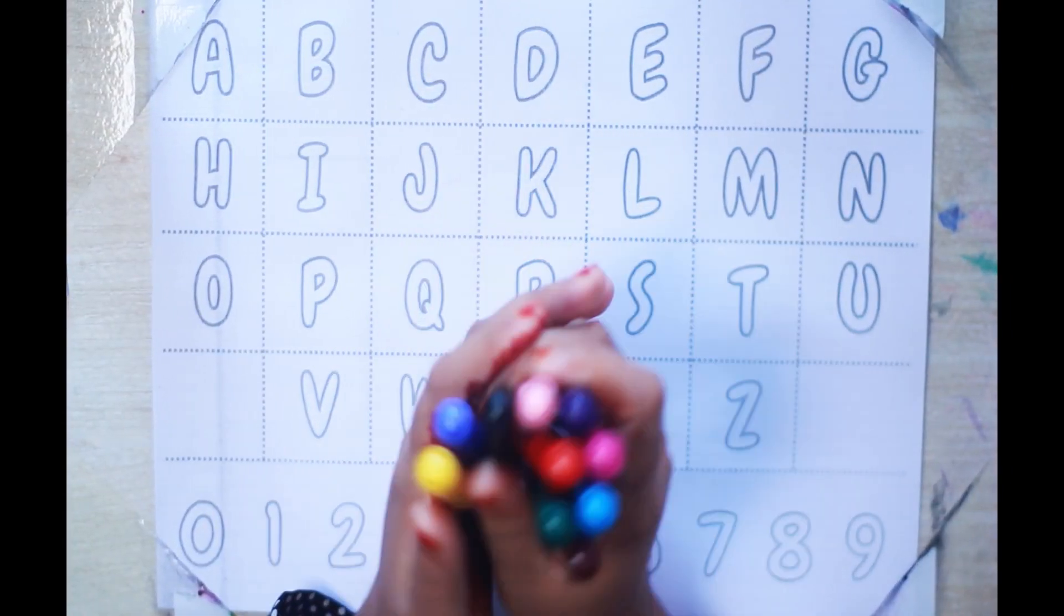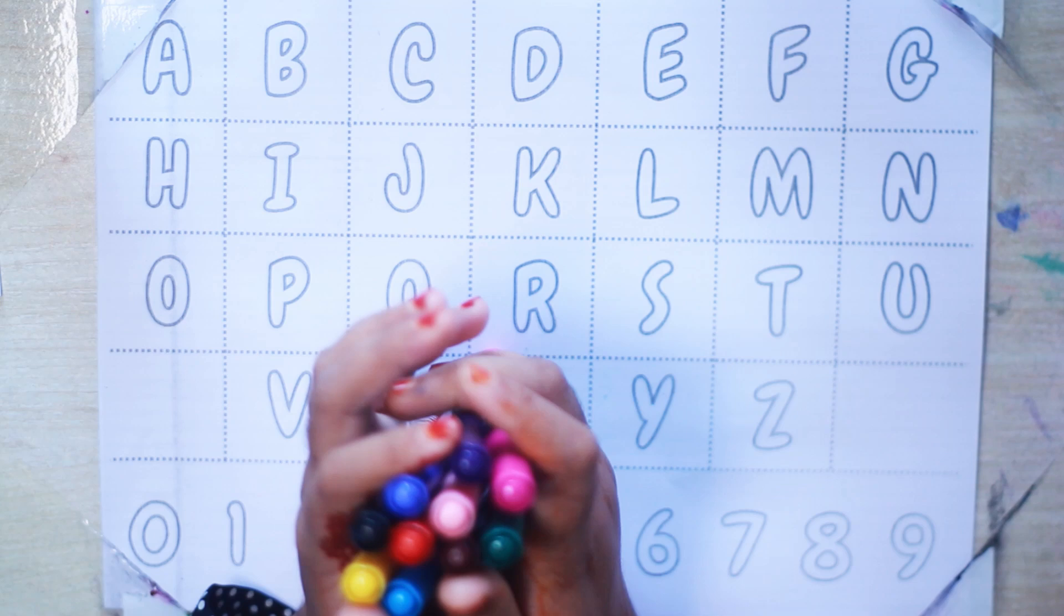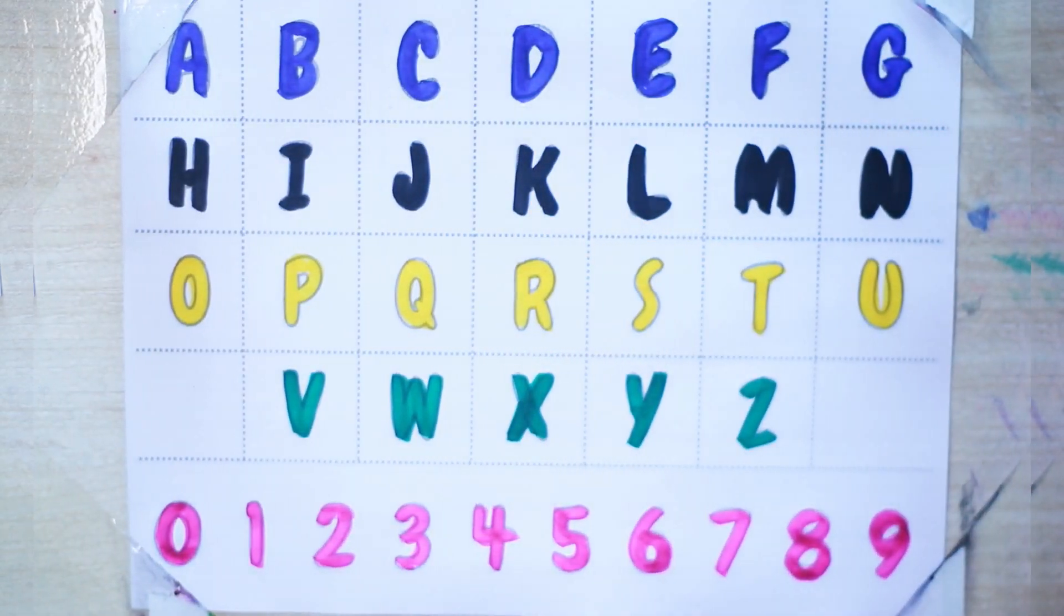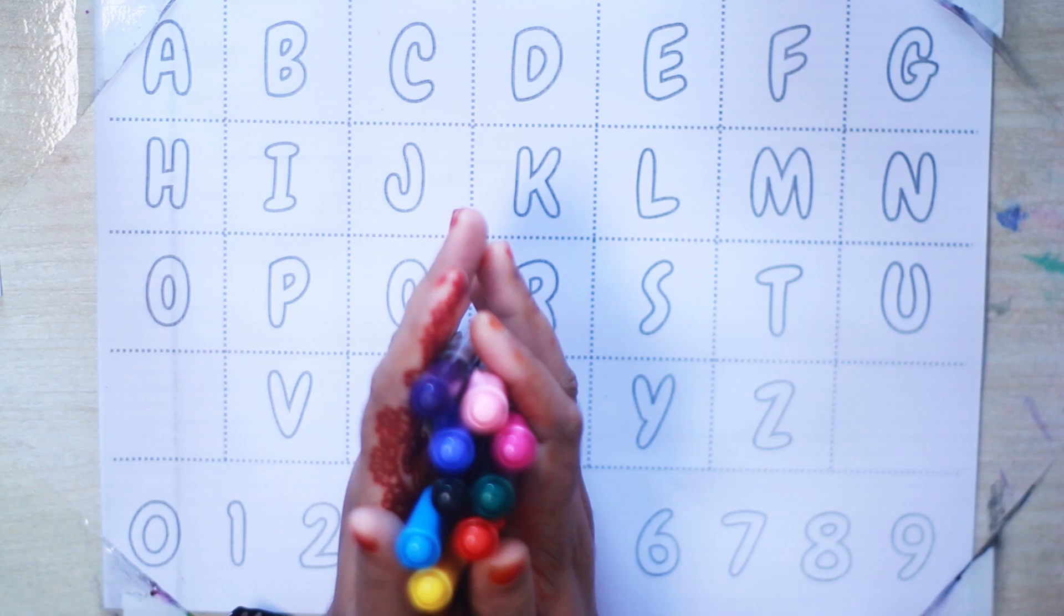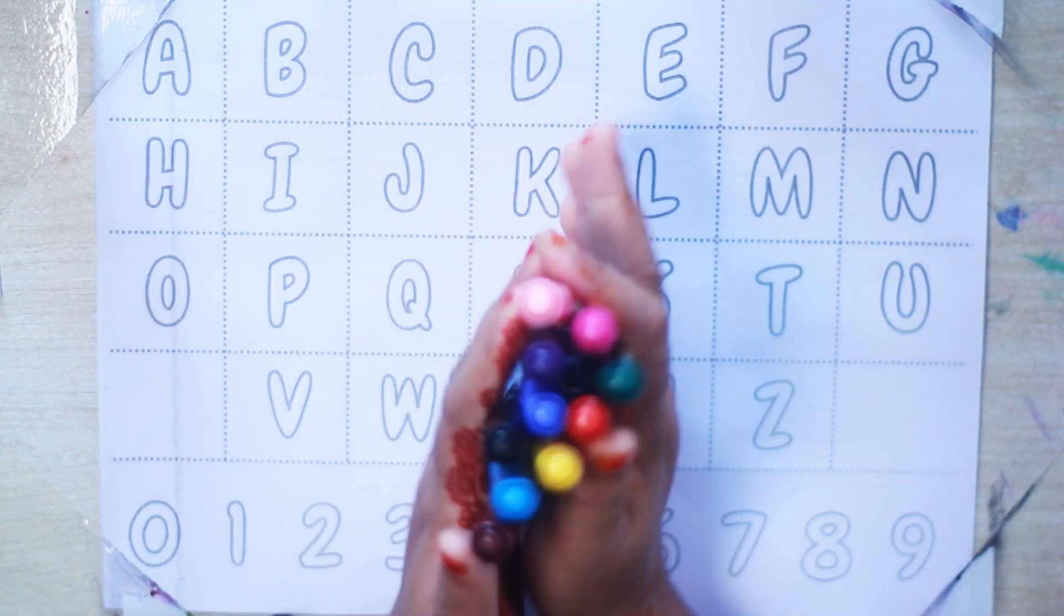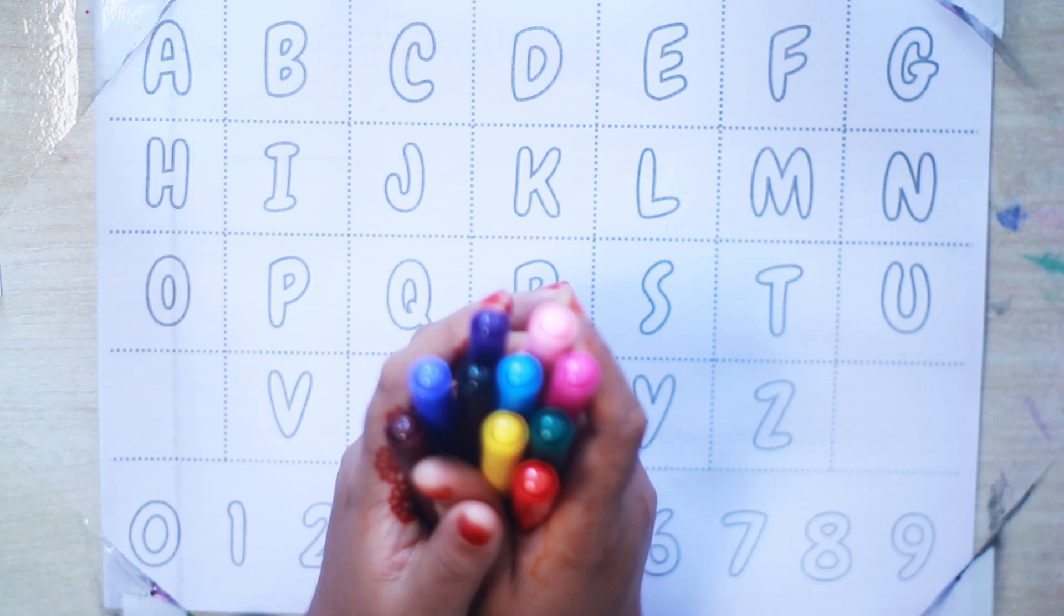Hello kids, welcome to another new video. Today we will learn the alphabet from A to Z and counting numbers zero to nine with your favorite YouTube kid, Zenny. It starts with colors.